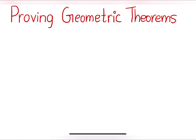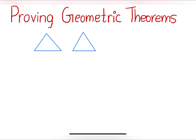I'd like to make a couple things clear first. When we have two triangles, such as this one and this one, if we've been given that — let's name these two triangles A, B, C and D, E, F — if we have been given that any one of their sides is equal.